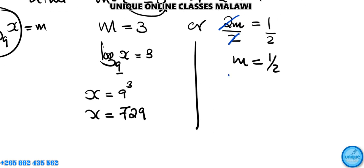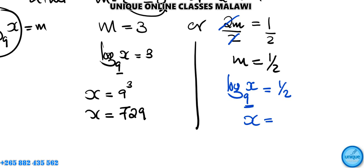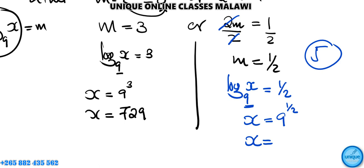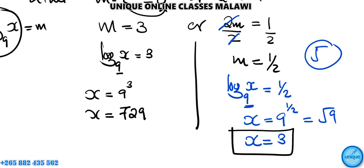For the second solution, log base 9 of x equals one half. Converting to exponential form, x equals 9 to the power of one half, which is the square root of 9, giving x equals 3. So the values of x are 729 and 3.